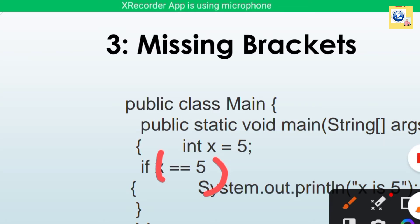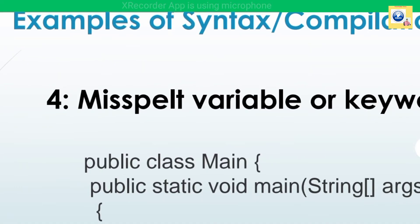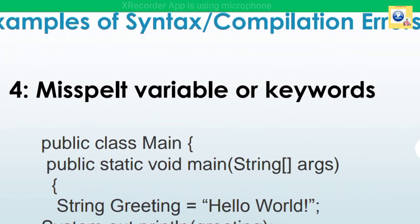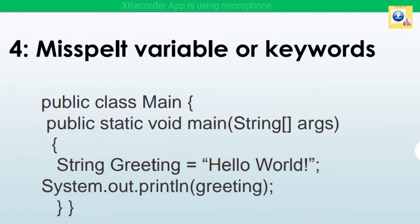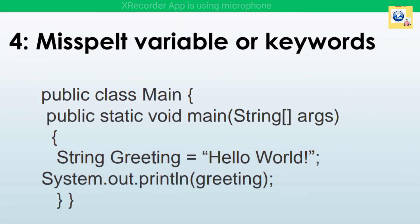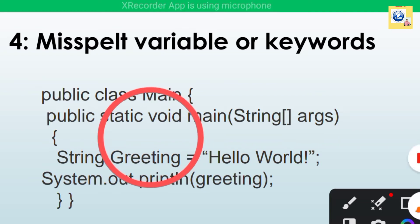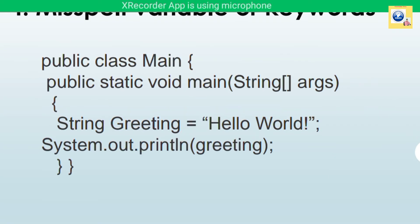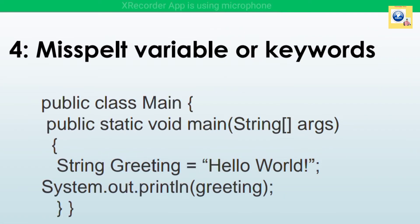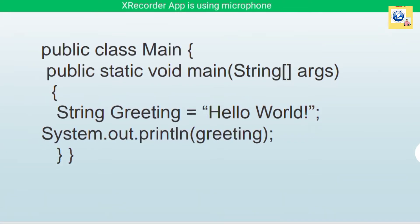Another example of a compilation error is misspelled variables or keywords. In the following example, the variable 'Greeting' is declared with a capital G, but when it is used later it is written with a small g. This generates an error because Java is a case-sensitive language — capital and small letters are treated differently.